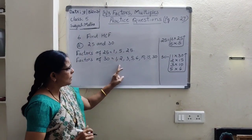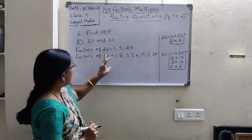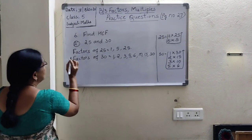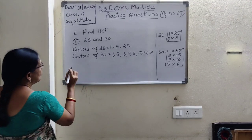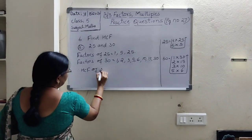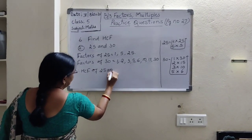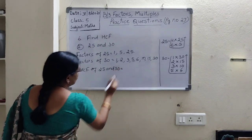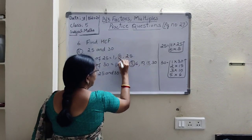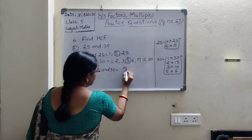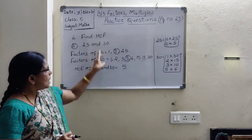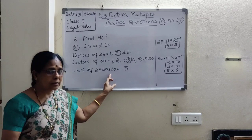These are the factors of 30. In this, which is the common factor? HCF means highest common factor. So HCF of 25 and 30 — which is the common number? 5. So 5 is the highest common factor of 25 and 30. This is one method — you can find using another method also.